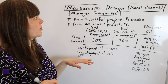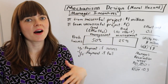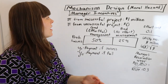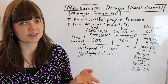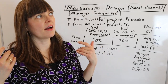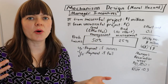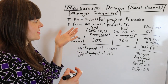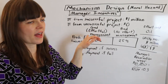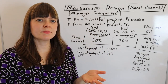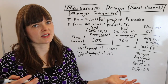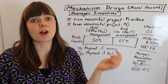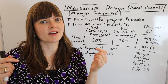So here we have a problem which is a mechanism design problem of the moral hazard flavor, where we're trying to incentivize behavior. This is a classic manager situation where the manager is going to be like a CEO, and we as the principal are going to be a board of directors. We're trying to incentivize the CEO to put forth effort, but we can't observe their effort — all we can observe is whether or not the project succeeded or failed. I'll put the actual problem in the description below.